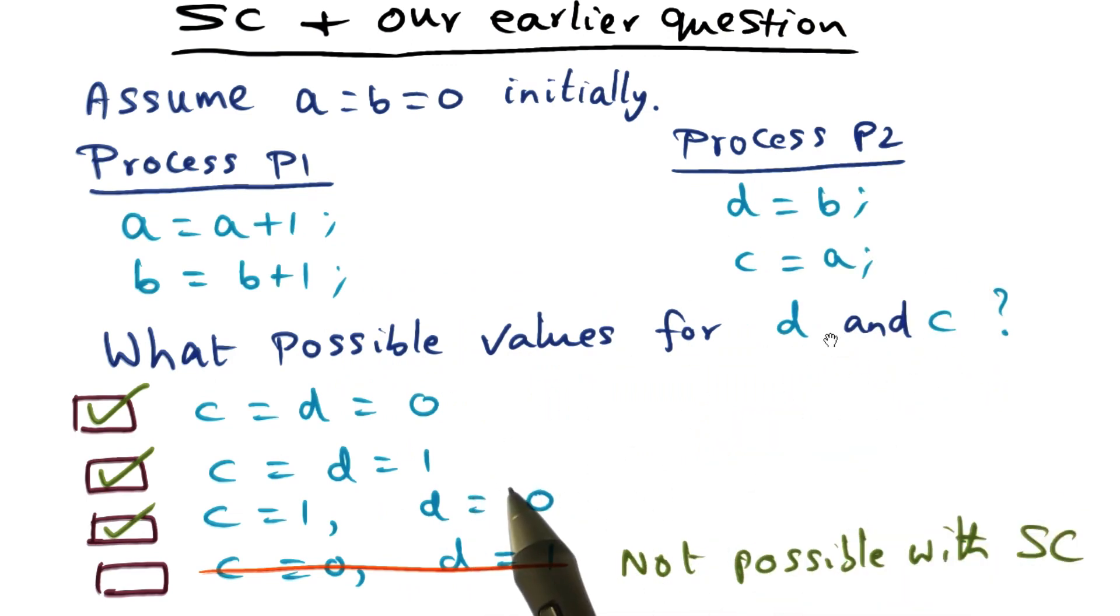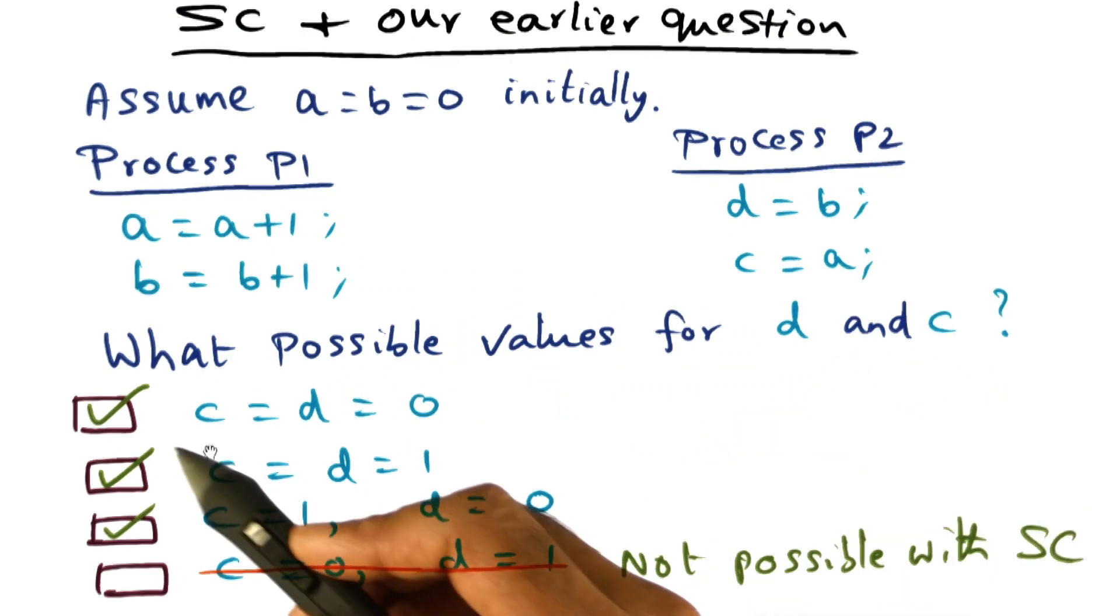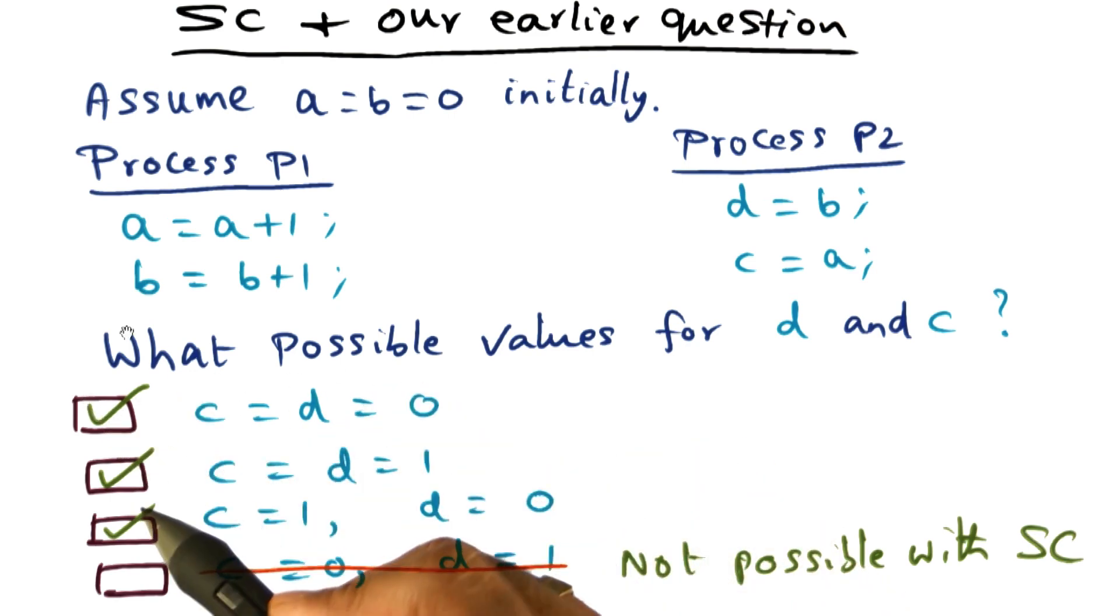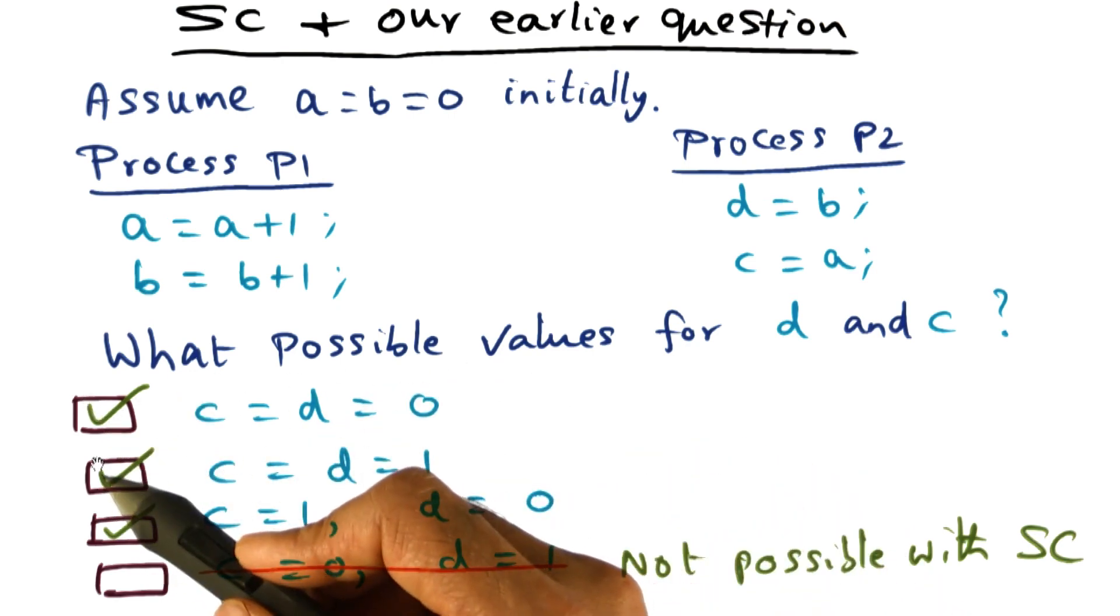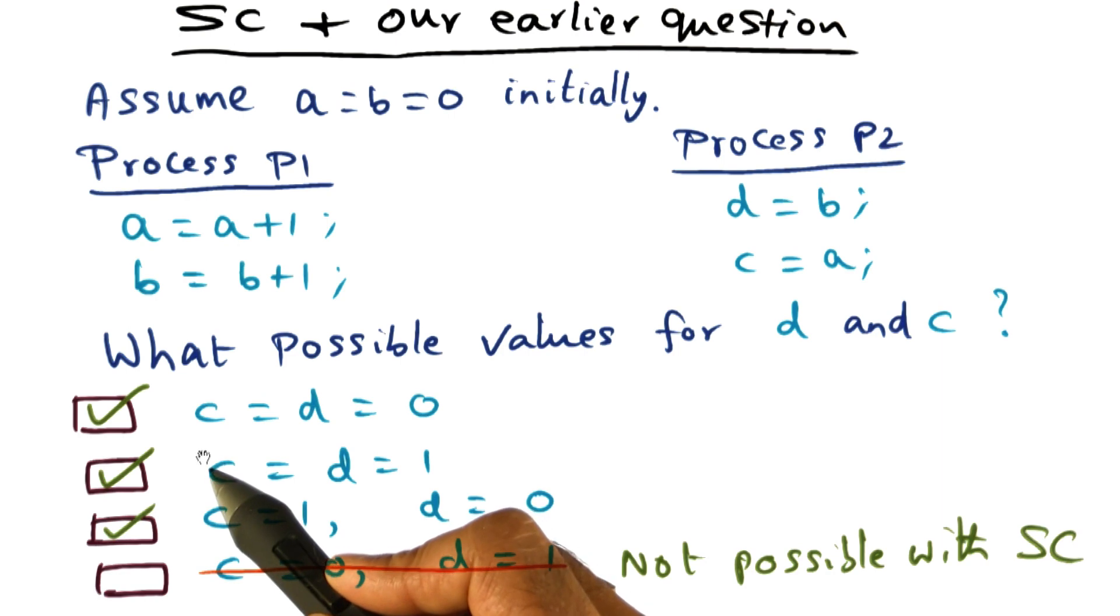Now, what possible values can D and C get? Well, obviously, you can get the first choice, no problem with that. You can get a second choice, you can get the third choice,